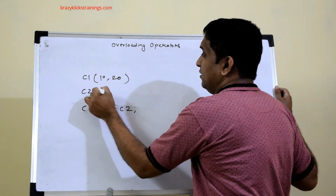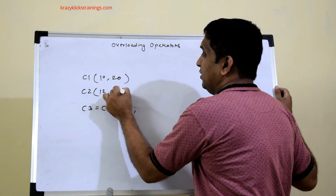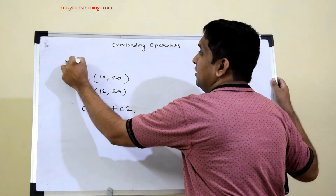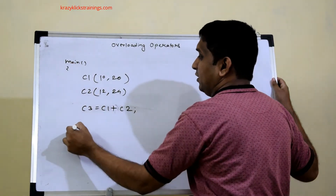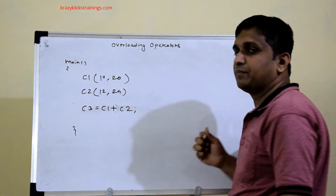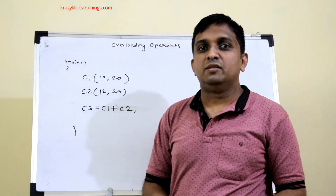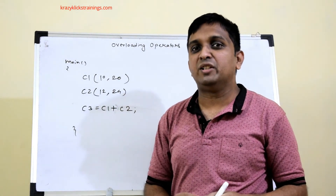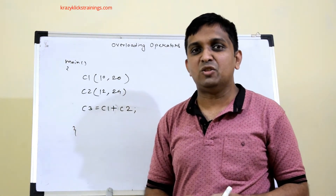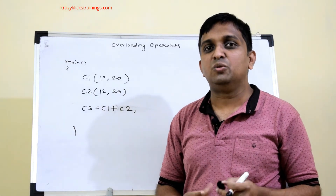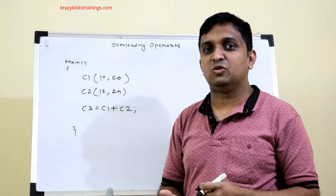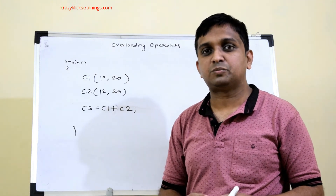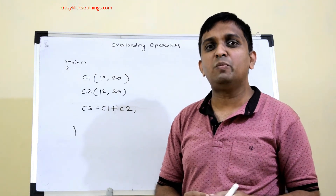c1 was declared as 10+20i and c2 as 12+24i inside the main function. Now we will see how to overload the plus operator, or how to overload any operator. There are three types of operators in C++: unary, binary, and ternary. The ternary operator cannot be overloaded, so only unary and binary operators can be overloaded.